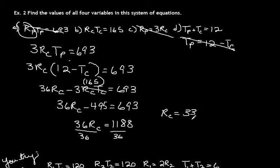And if we divide both sides by 36, we get RC equals 33. And then you're just going to go back and substitute things in. So you put 33 in here, divide 165 by 33, and I'll just give you the answers for the other one. RP is going to be 99. TP is going to be 7, and TC turns out to be 5.